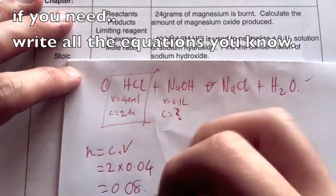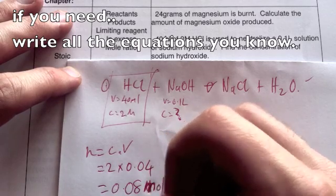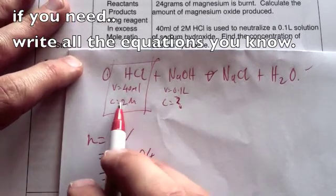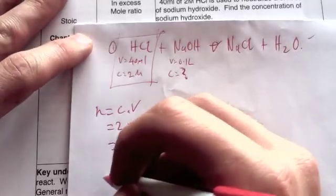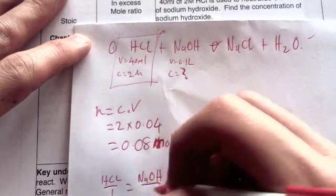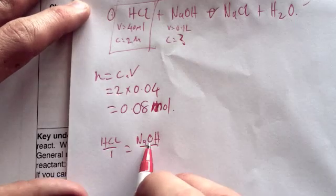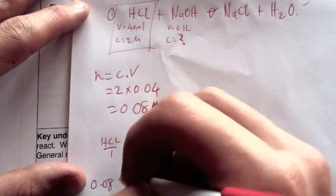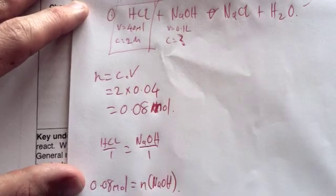That comes out as being 0.08 mol of HCl. So that's how much mole we have of this. Now from this equation, what you can see is a mole ratio tells you you have HCl over 1 equals NaOH over 1. So that means your number of moles of HCl is going to be the same as your number of moles of sodium hydroxide. So therefore 0.08 mol equals the number of moles of sodium hydroxide.